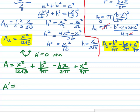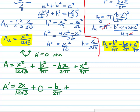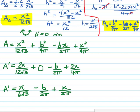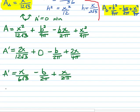Let's find the first derivative. The derivative of X squared over 12 root 3 is 2X over 12 root 3. B squared over 4 pi is a constant, so its derivative is zero. The derivative of negative BX over 2 pi is just negative B over 2 pi. Then bringing the two out front with the power rule on X squared over 4 pi gives 2X over 4 pi. Simplifying, A prime equals X over 6 root 3 minus B over 2 pi plus X over 2 pi. We set this equal to zero to find the X value that gives the minimum area.